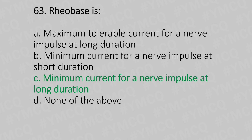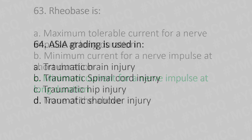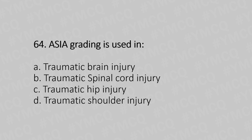Question 64: ASIA grading is used in — Option A: traumatic brain injury, Option B: traumatic spinal cord injury, Option C: traumatic hip injury, Option D: traumatic shoulder injury. The answer is Option B, traumatic spinal cord injury.